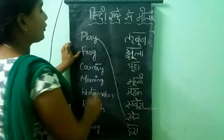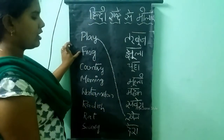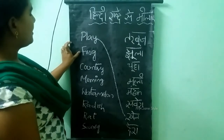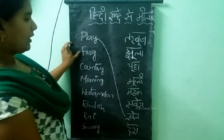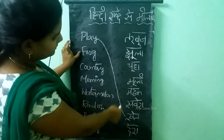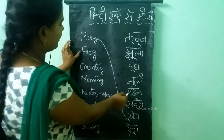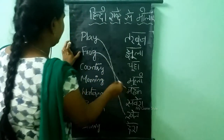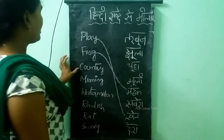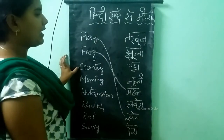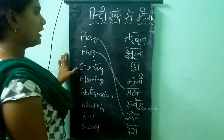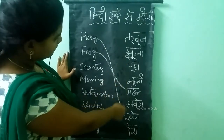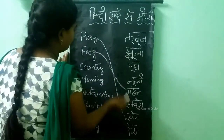Next word is Frog. Frog ko kahte hai Madak. Where is Mandak? Here it is. Next word is Country. Country ko kahte hai Desh. Desh kida hai idar? Here it is.